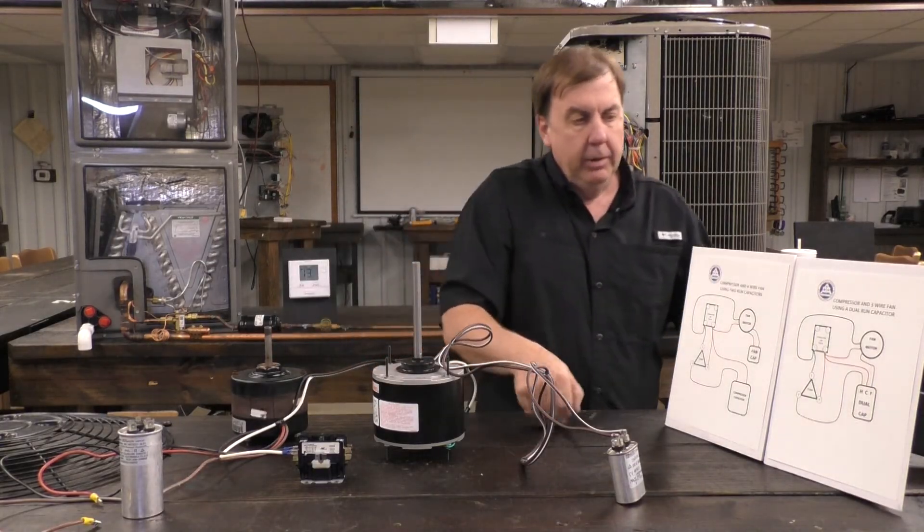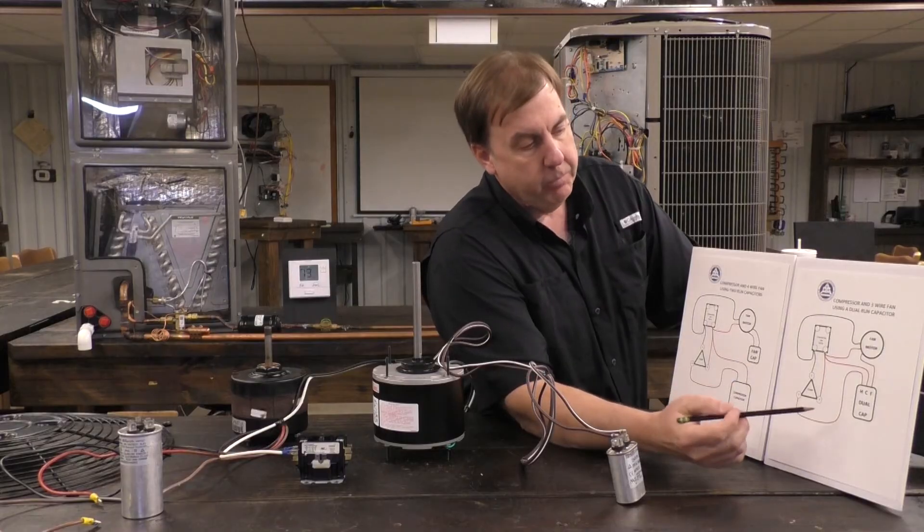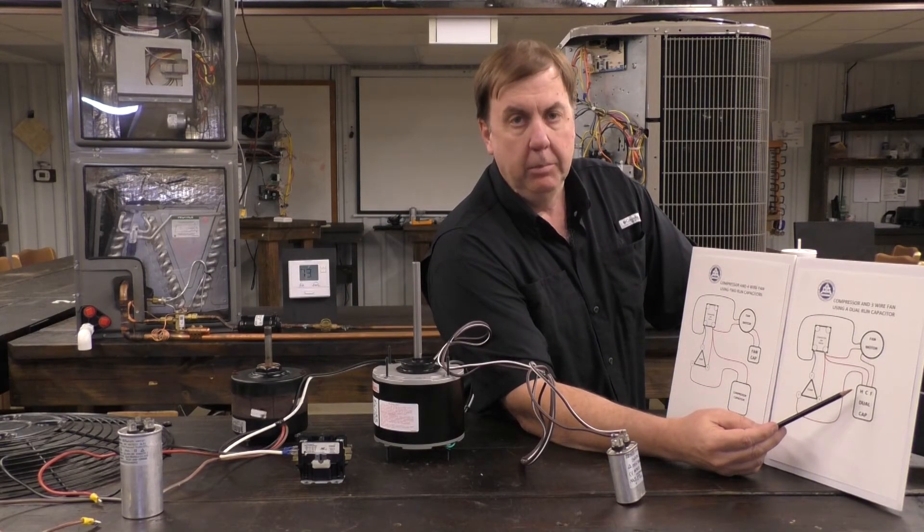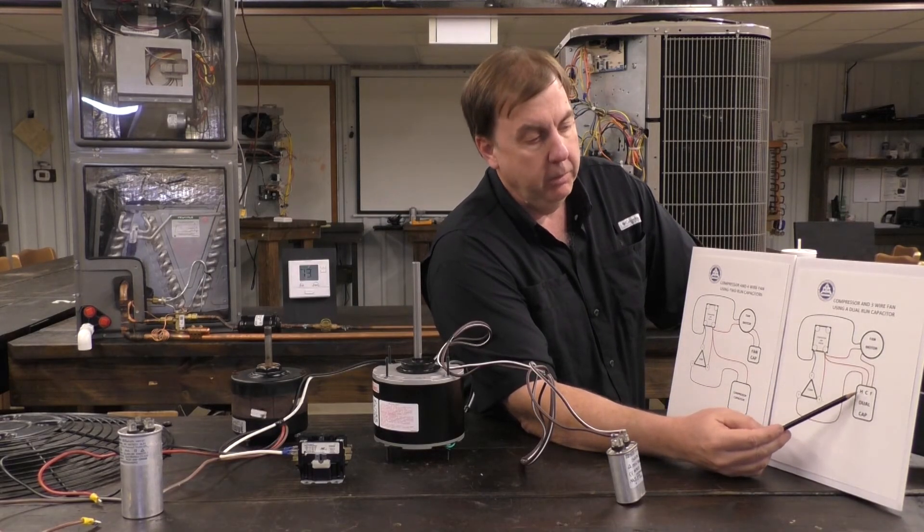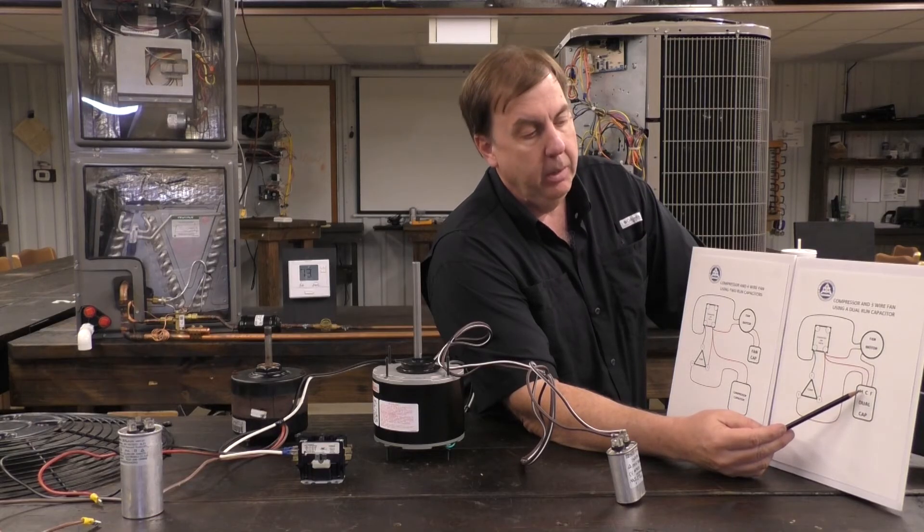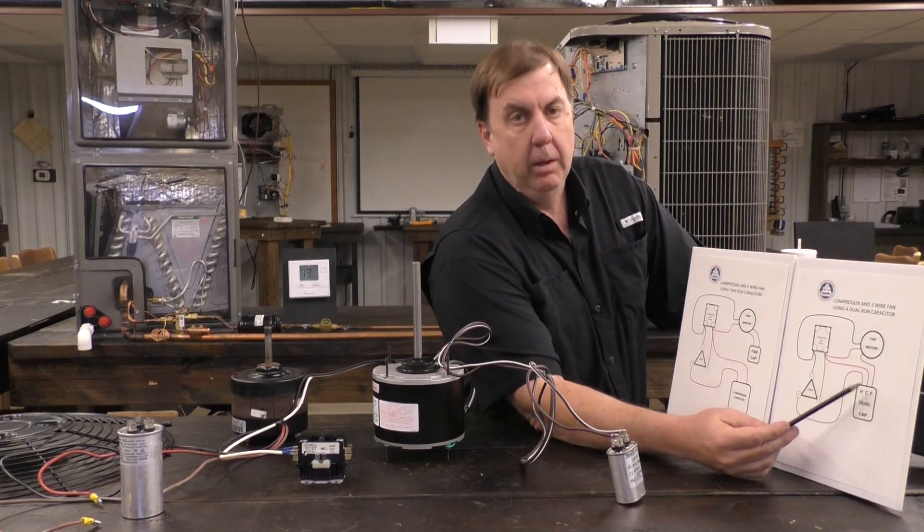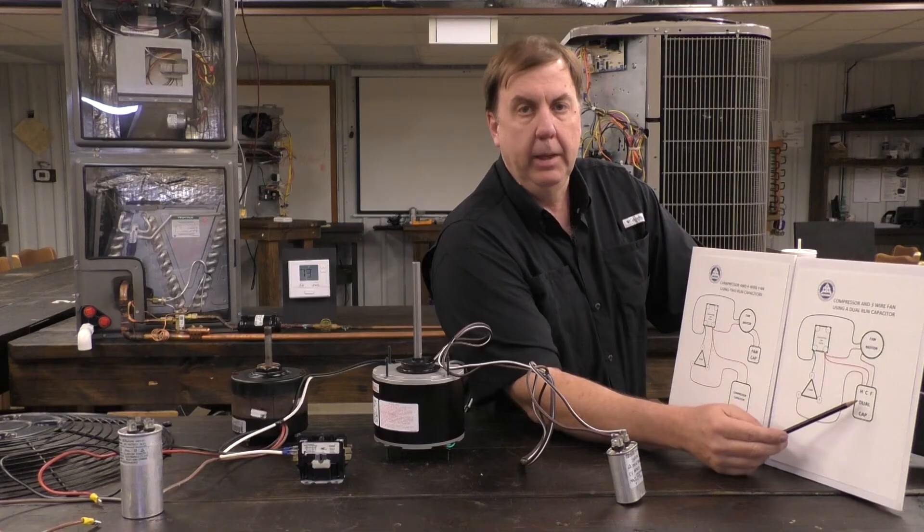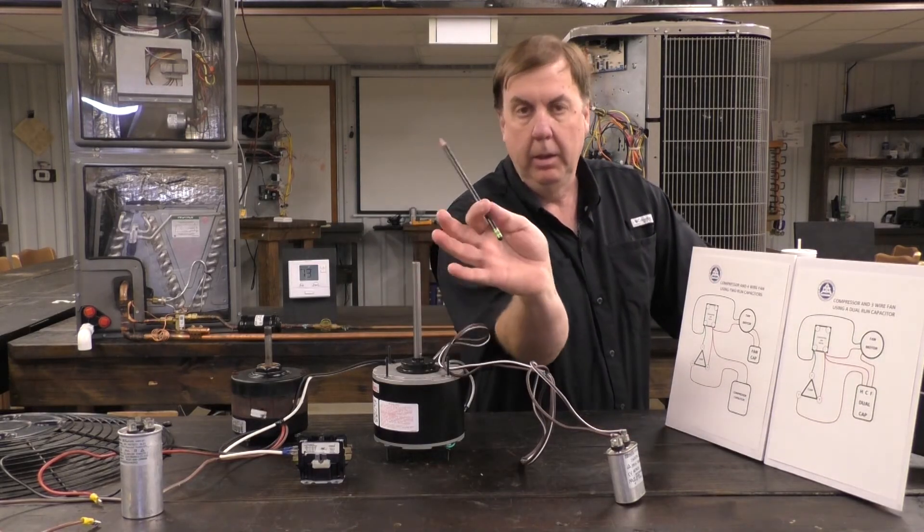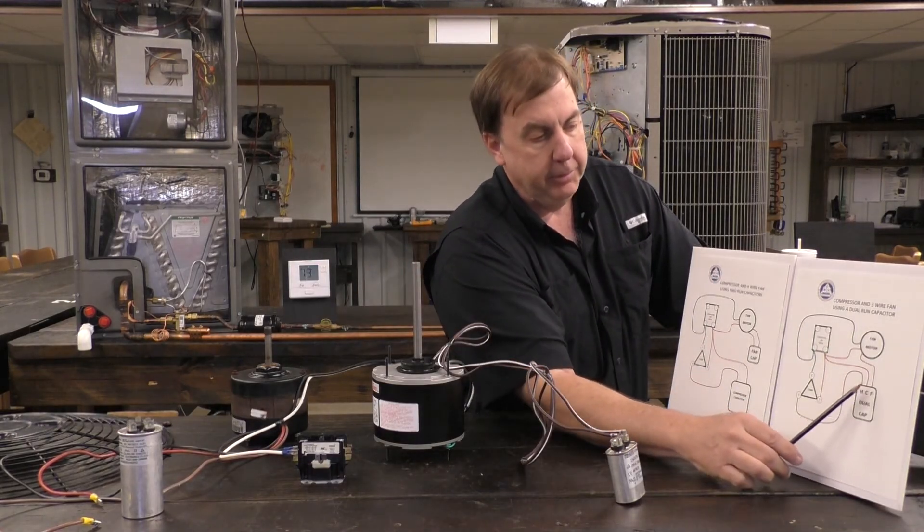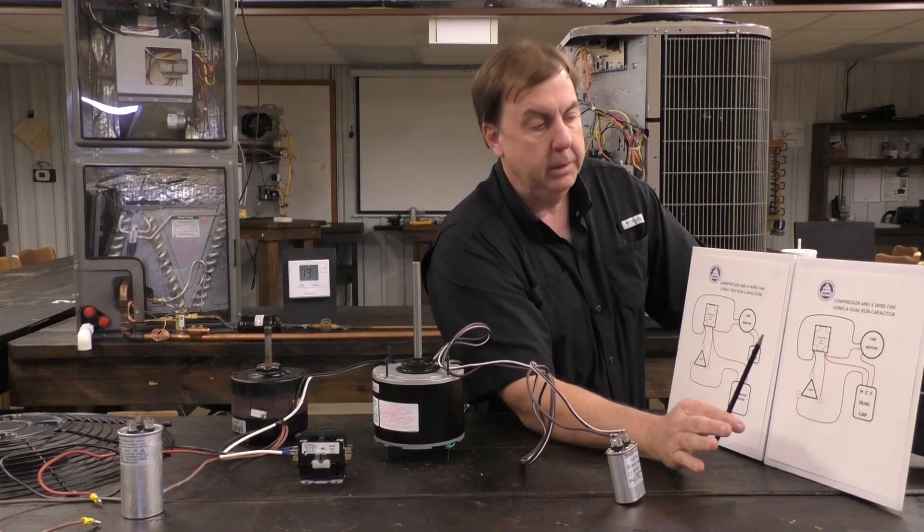So this is our original motor with our three wire cap, our dual cap. We've unhooked the fan wire off the cap and then we're done with that cap, right? Sitting over there, we're done. It would still have two wires hooked up to it, but we're not going to touch it anymore. We've taken our motor out. We've unhooked it from the contactor.